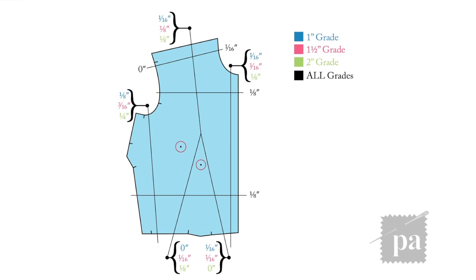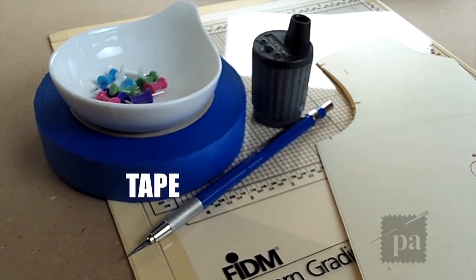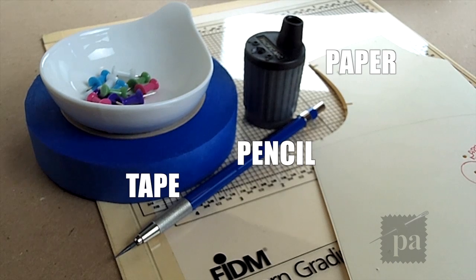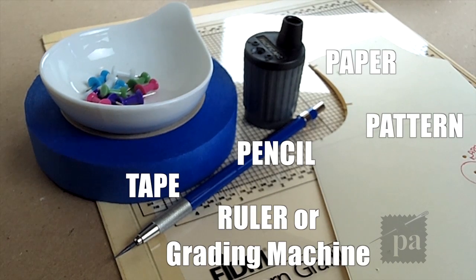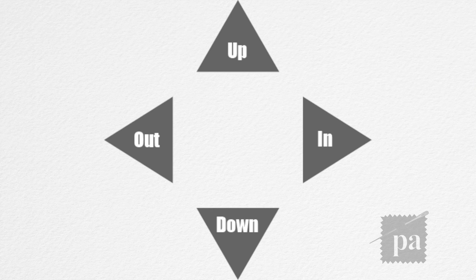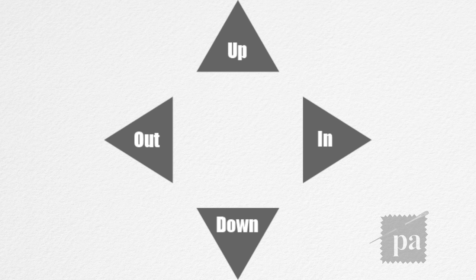Now in industry these measurements and breakdowns would be a little bit different. Every company has their own breakdowns and rules, but this is the basic. For this tutorial I'll be using tape, pencil, paper, pattern, ruler, or grading machine. For those of you who are returning, I'll briefly go over the movements and the wording that I use: it's up, down, in, out, and this is the way you would see it on a dress form on a person. I'll be rotating it when I have it in the machine or on the ruler.